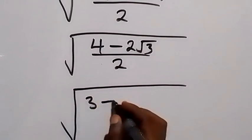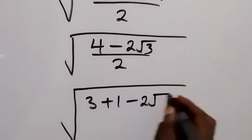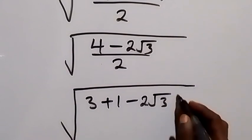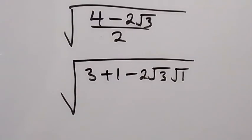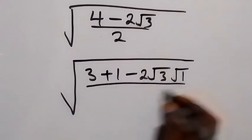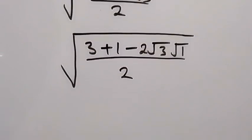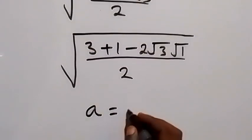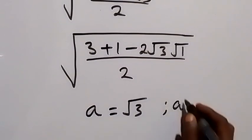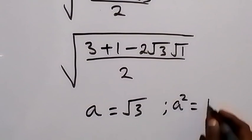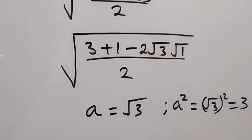And this becomes square root of 3 plus 1, then minus 2 root 3. Then we can also put in root 1 here; root 1 is 1, simply as 1, then divided by root 2. And from here let's denote a as square root of 3. That means a squared will be square root of 3 squared, which will give us 3. So a squared is 3.